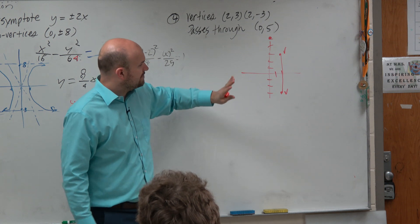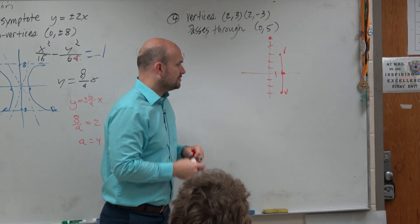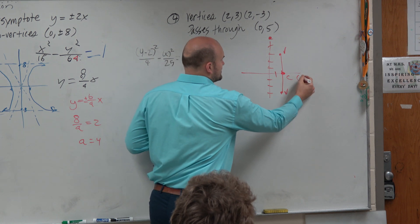We also know that between our two vertices is the center. So the midpoint of these two points is going to be our center, which is at 3, 0.